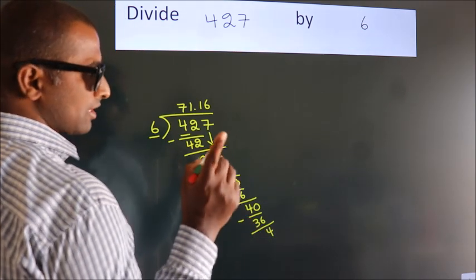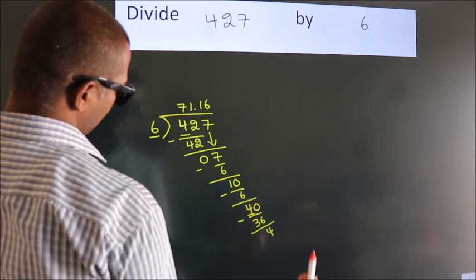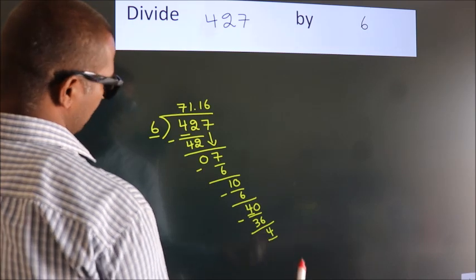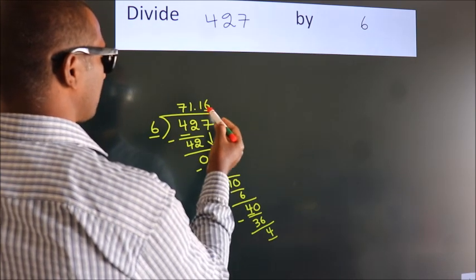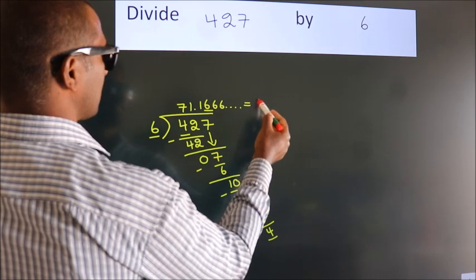Now you observe. We had 4 here and we got 4 again. That means this number keep on repeating. So this is our quotient.